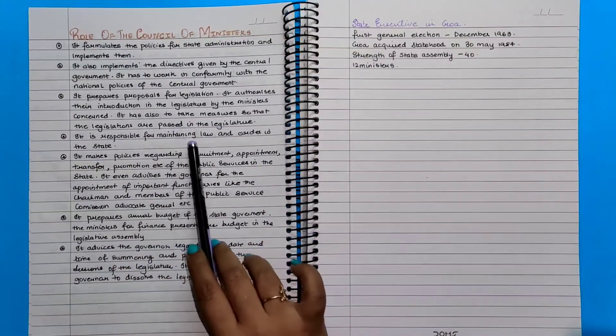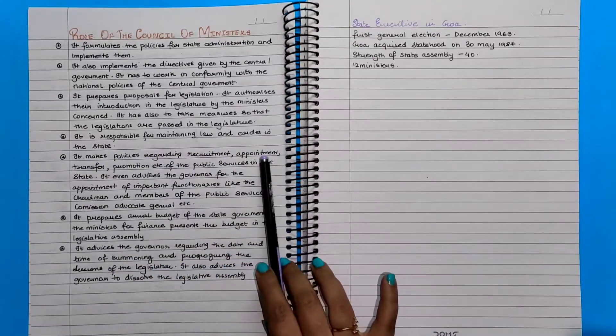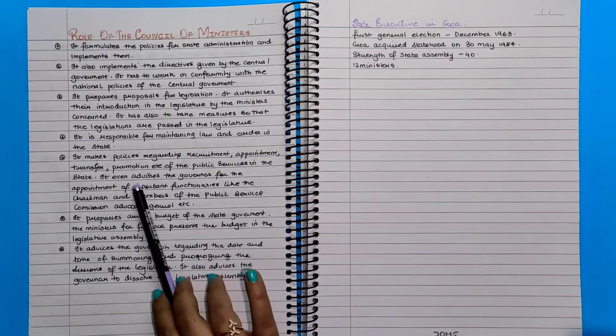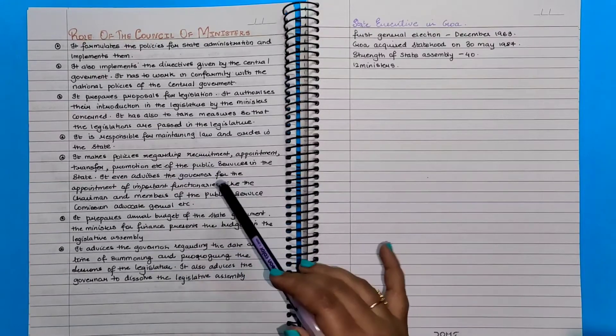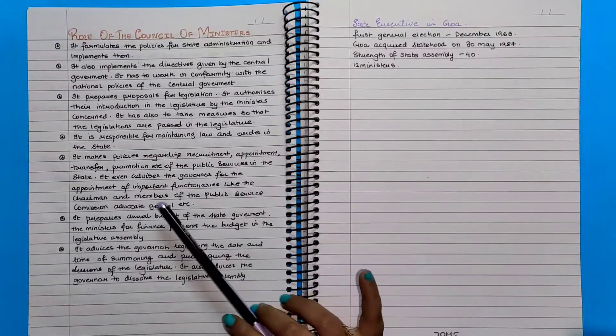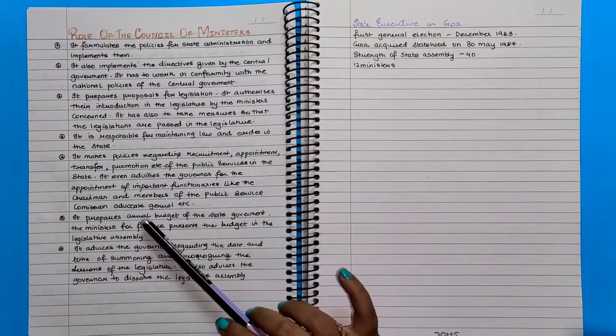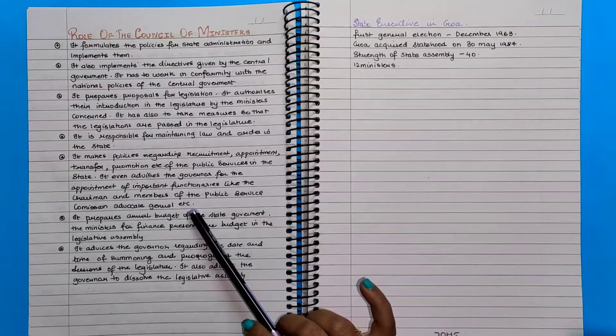It is responsible for maintaining law and order in the state. It makes policies regarding recruitment, appointment, transfer, promotion, etc. of the public services in the state. It even advises the governor for the appointment of the important functionaries like the chairman and the members of the public service commission, advocate general, etc.